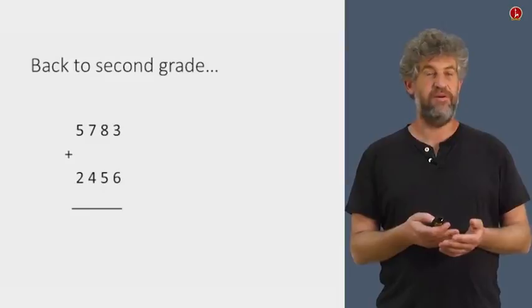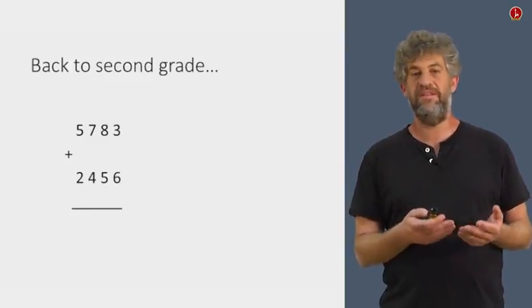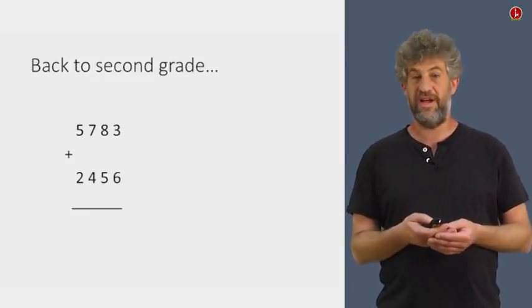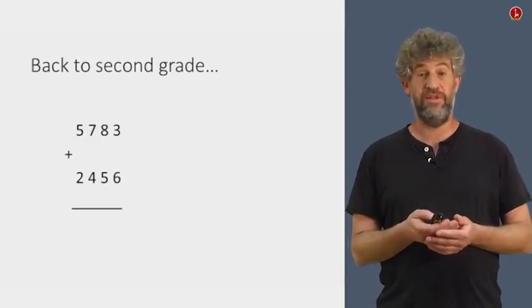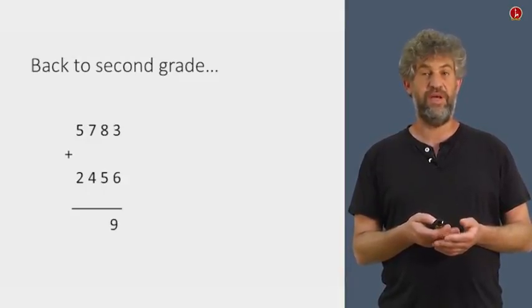We need to add 5783 plus another number. How do we do this kind of addition? What did we learn? Well, we start with the ones, with the rightmost digit, and we add three plus six, we get the nine, and we're all very happy with that. That's easy.